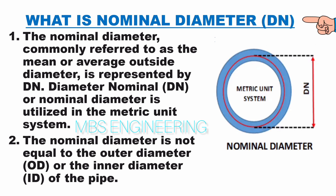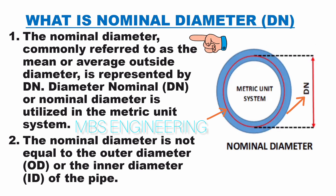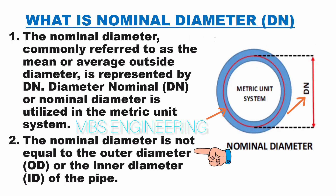Next, we will learn what is nominal diameter, DN. The nominal diameter, commonly referred to as the mean or average outside diameter, is represented by DN. Diameter nominal, or nominal diameter, is utilized in the metric unit system. The nominal diameter is not equal to the outer diameter (OD) or the inner diameter (ID) of the pipe.